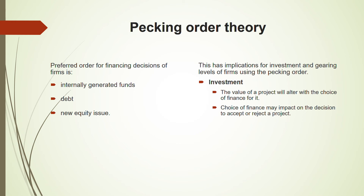For example, you have a project requiring 1.5 million in investment, but your internally generated funds are only 500,000. If you cannot raise the remaining 1 million through debt because your gearing ratio is already above the target ratio, you will simply reject the project — you cannot finance it. Additionally, higher-geared companies with less cash may under-invest: if your gearing ratio is already 60% and you have less cash, you will not invest even where you should.